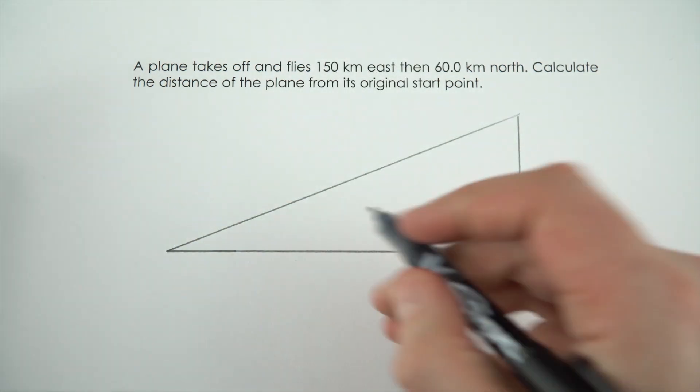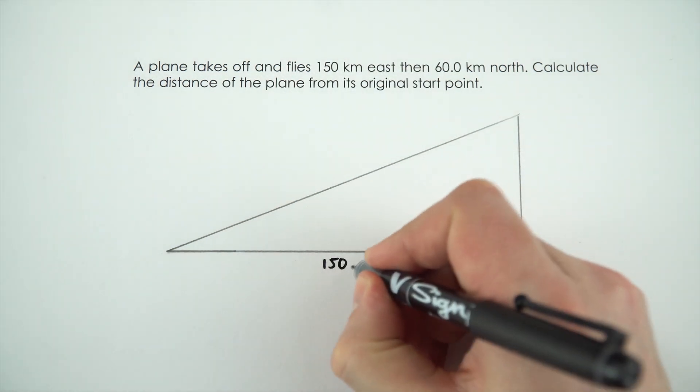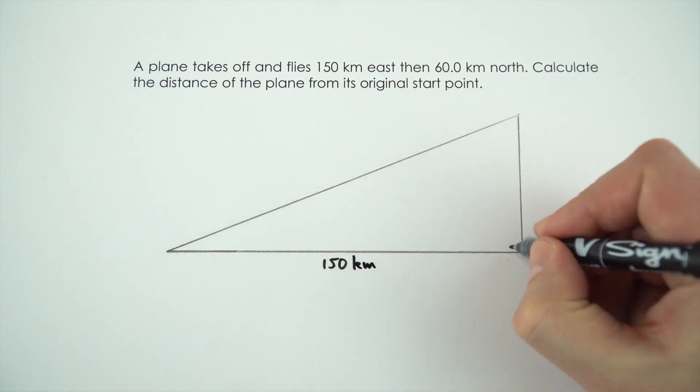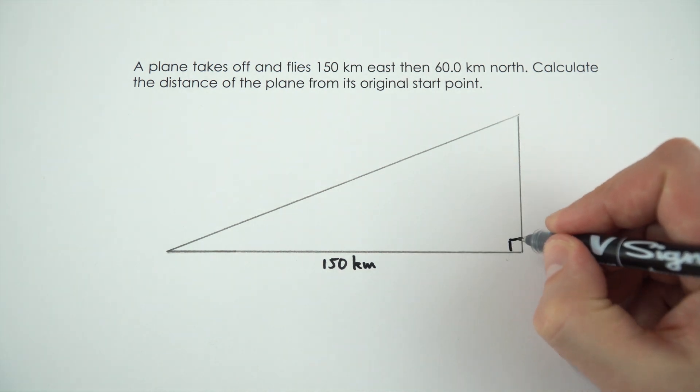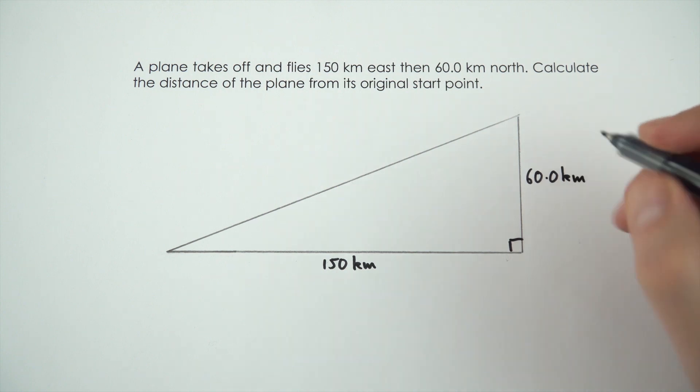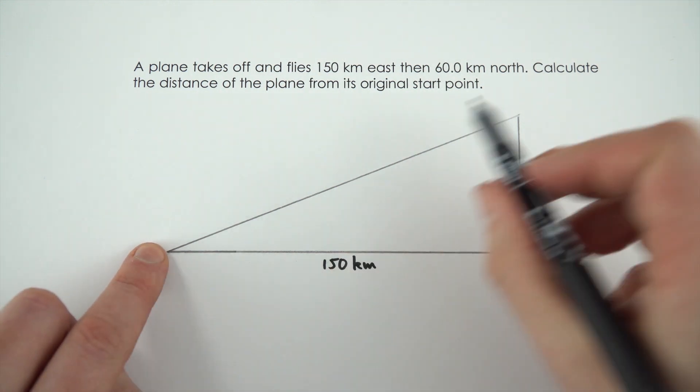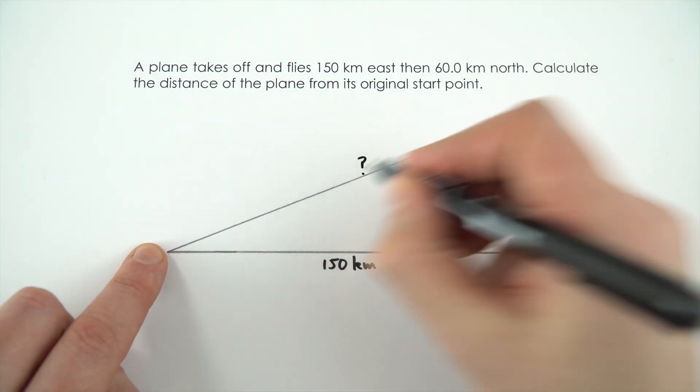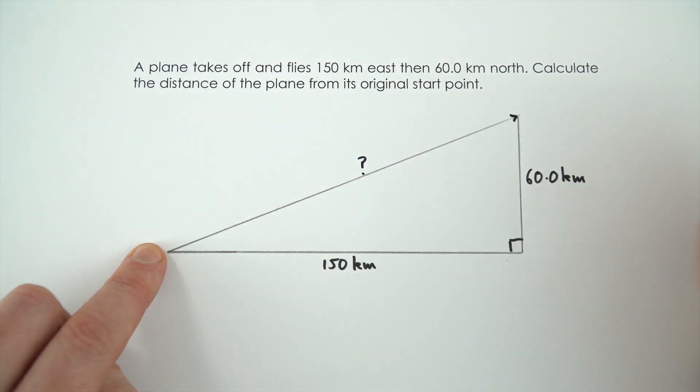Now when it comes to labeling this we've got 150 kilometres along here. It goes east and then north so that's definitely a right angle and then it goes 60 kilometres north. And what we want to know is the distance of the plane from its starting point so it's the length of this side that's our unknown.